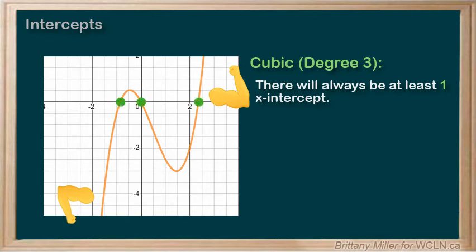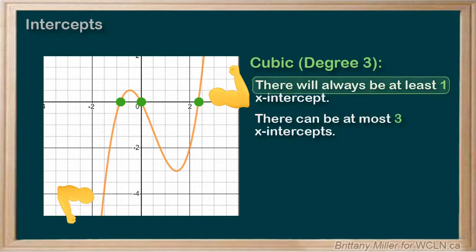Since it has a degree of 3, that means it can have at most 3 x-intercepts. So it will have 1, 2, or 3, but not 0.